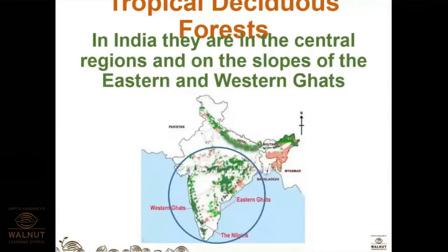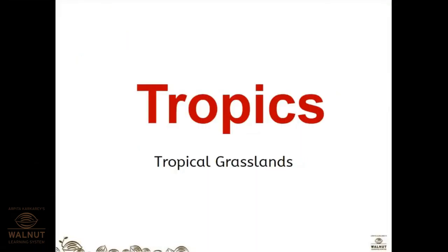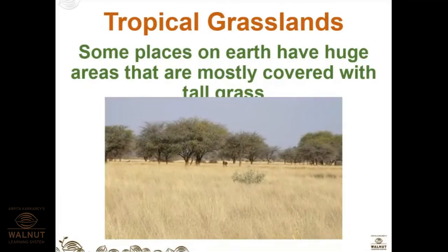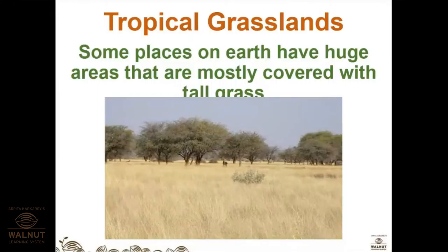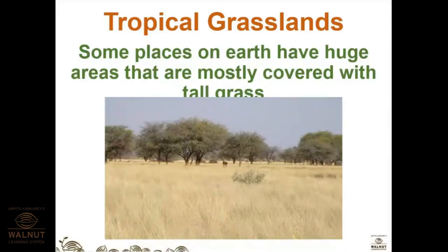Moving on to tropical grasslands. Some places on earth have huge areas mostly covered with tall grasses. If you watch discovery or geography channels you might have seen grasslands — a student mentioned Africa, which is correct. African savanna is a well-known example of grasslands.